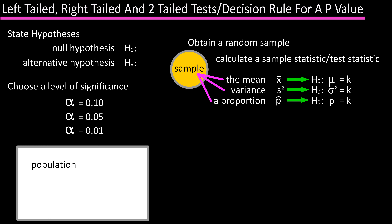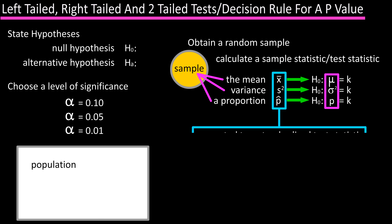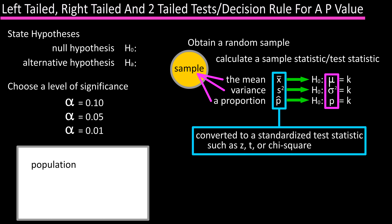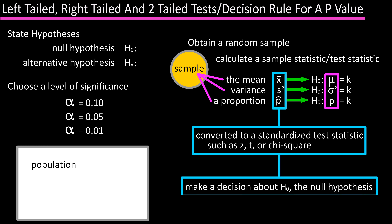This test statistic is calculated in relation to the parameter in the null hypothesis, such as mu, sigma squared, or p. The sample statistic, or test statistic, is then converted to a standardized test statistic, such as z, t, or chi-square, and the standardized test statistic is then used to make a decision about the null hypothesis.